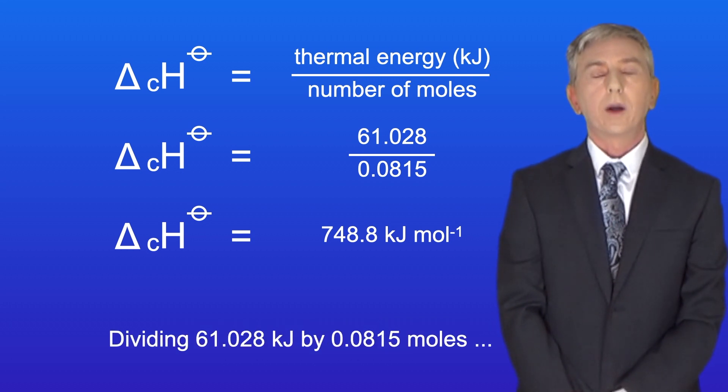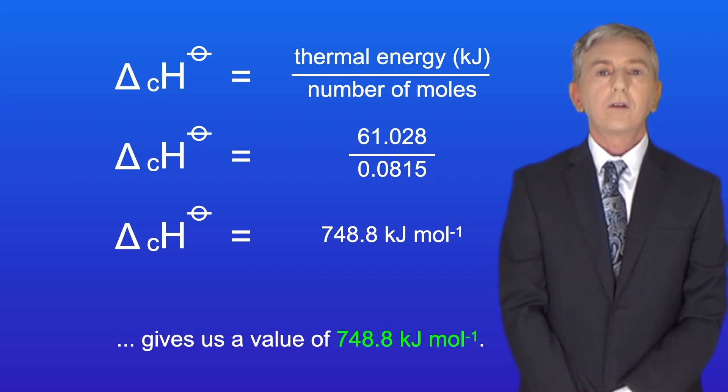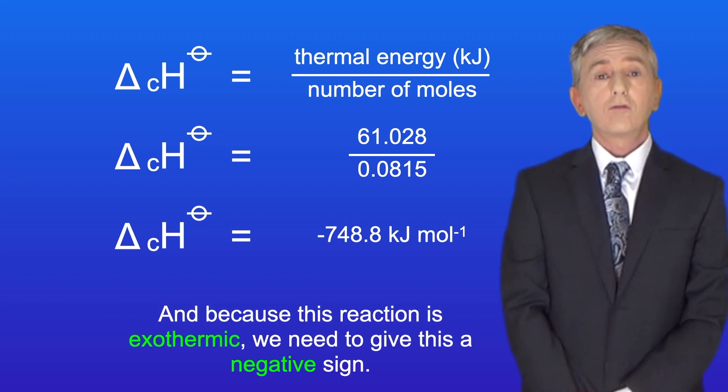Dividing 61.028 kilojoules by 0.0815 moles gives us a value of 748.8 kilojoules per mole. And because this reaction is exothermic, we need to give this a negative sign.